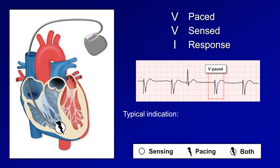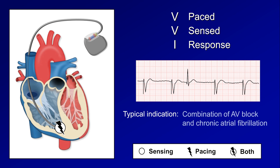VVI mode eliminates the problem of potentially pacing on T waves seen in VOO, but it lacks any synchrony between the atria and ventricles for patients in sinus rhythm. This can result in diminished cardiac output and flashes of symptoms whenever the atria contracts against an already contracting ventricle, known as pacemaker syndrome. Therefore, this is not a mode to use for patients in sinus rhythm, but rather is typically used in the combination of AV block and chronic atrial fibrillation.